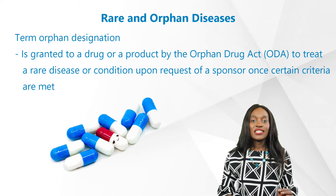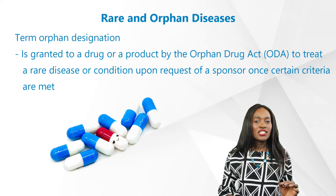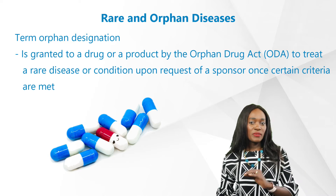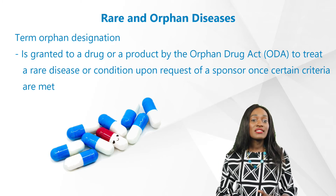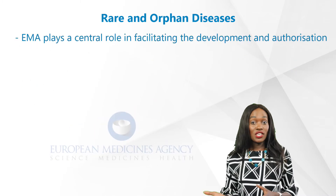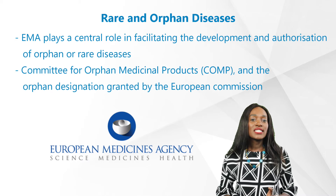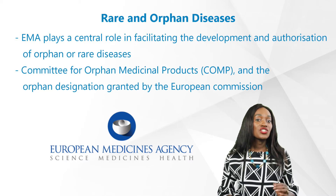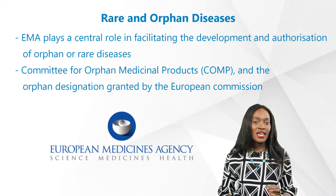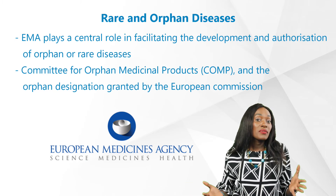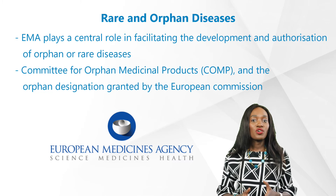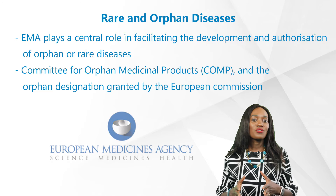In the US, this orphan status or designation is granted to a drug or product by the Orphan Drug Act (ODA) to treat a rare disease or condition upon request of a sponsor once certain criteria are met. In the EU, the EMA plays a central role in facilitating the development and authorization of orphan or rare disease medicines. Certain criteria must also be met, examined by EMA's Committee for Orphan Medicinal Products (COMP), and the orphan designation is granted by the European Commission.